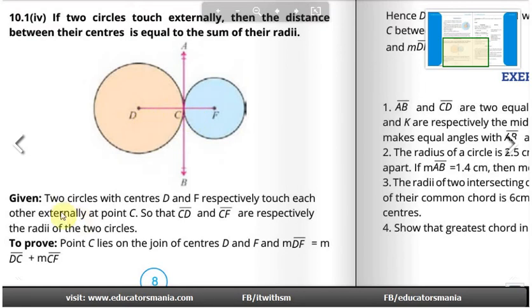Given: two circles with centers D and F respectively touch each other externally at point C, so that CD and CF are respectively the radii of the two circles. To prove: point C lies on DF and CD + CF = DF.